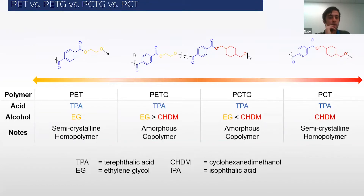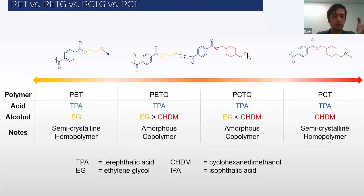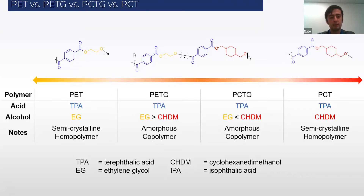It may be a little confusing at first, but if you look on the very left here with regular PET, that is the structure where we have that blue component and that yellow component. That blue component really gives you the rigidity, the strength and stiffness of the material, while that yellow component provides the more flexibility.